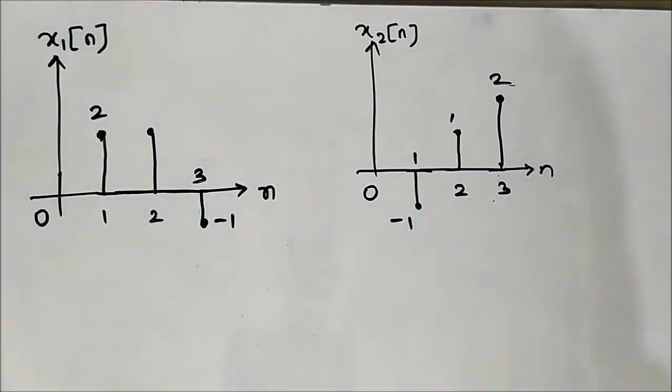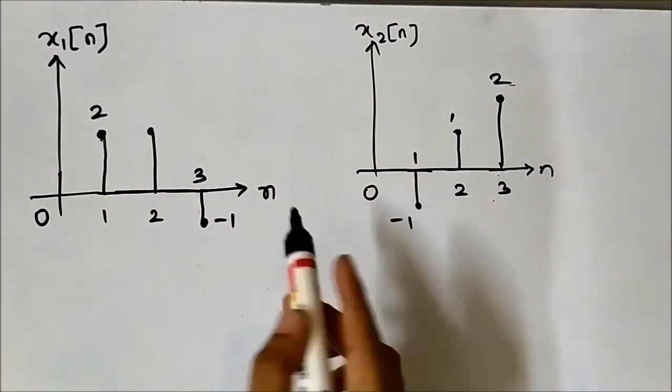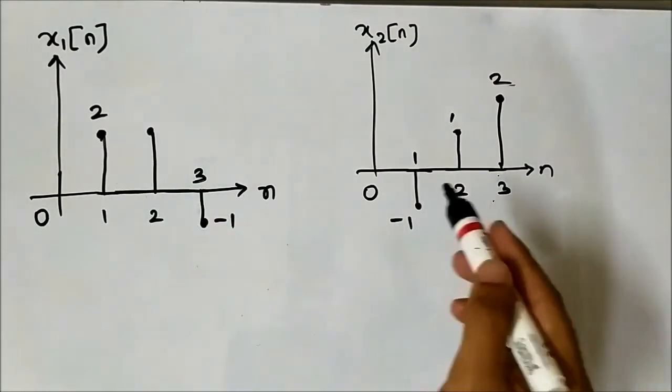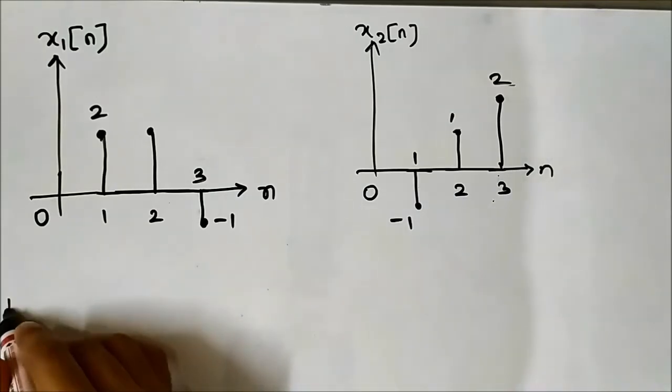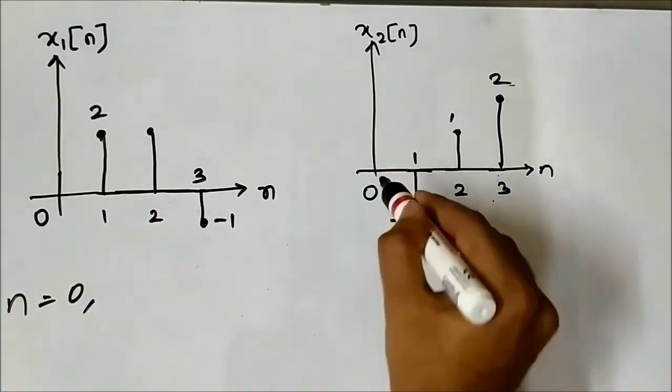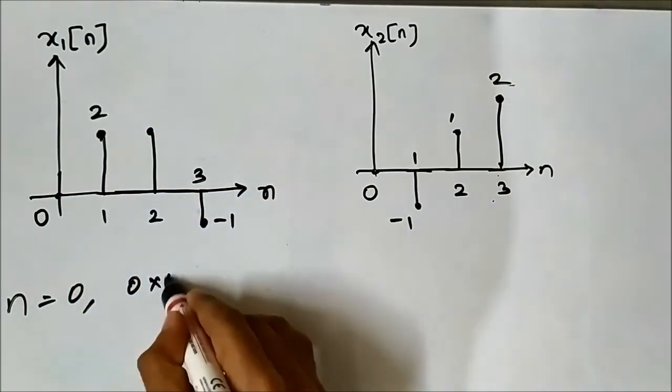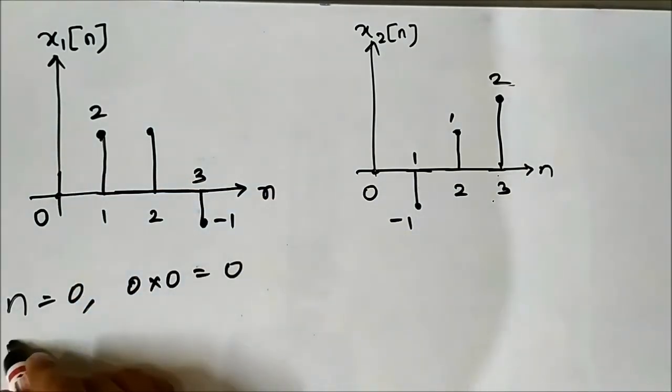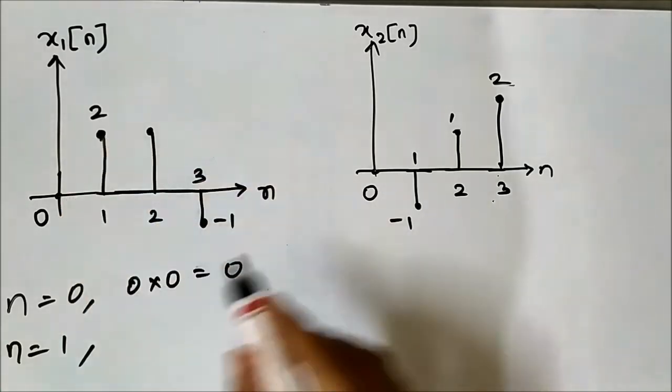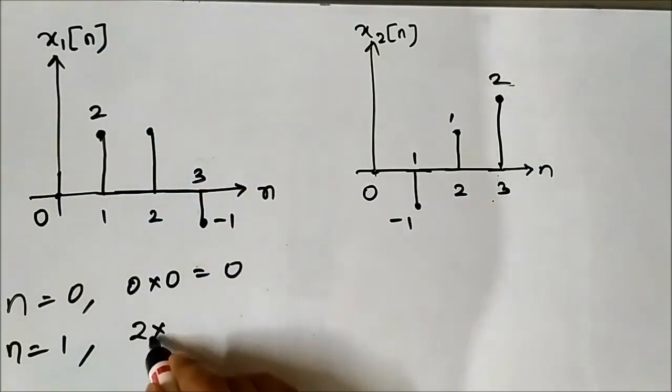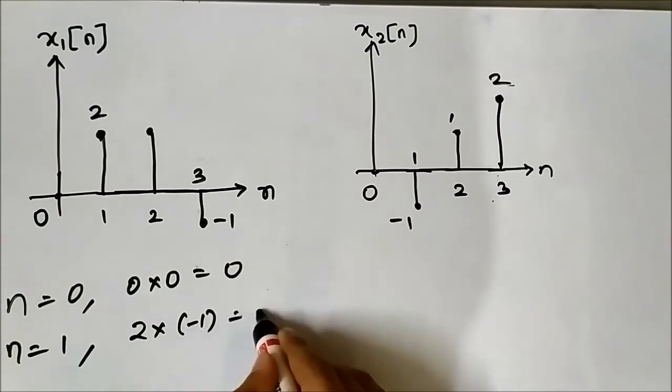Now we have to perform signal multiplication. Same thing, we will multiply the signal amplitude values at the respective discrete time instances. At n equals 0, both of them are 0, so 0 into 0 equals 0. At n equals 1, here it is 2, here it is -1, so 2 into -1 equals -2.